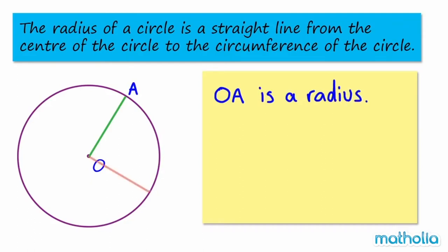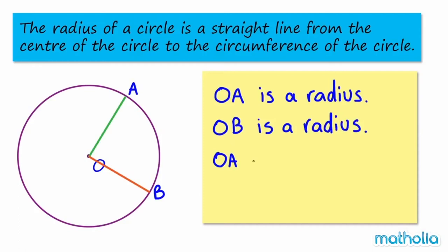The line OB is also a radius of the circle. Lines OA and OB are radii of the circle.